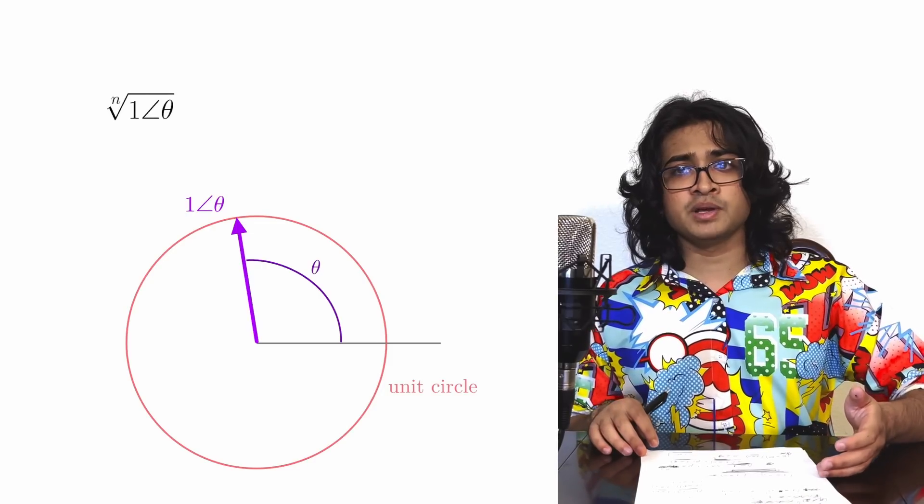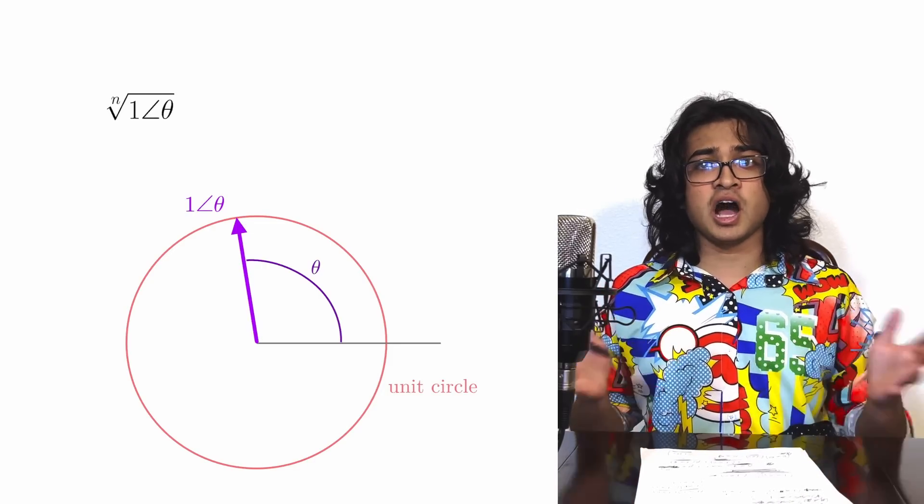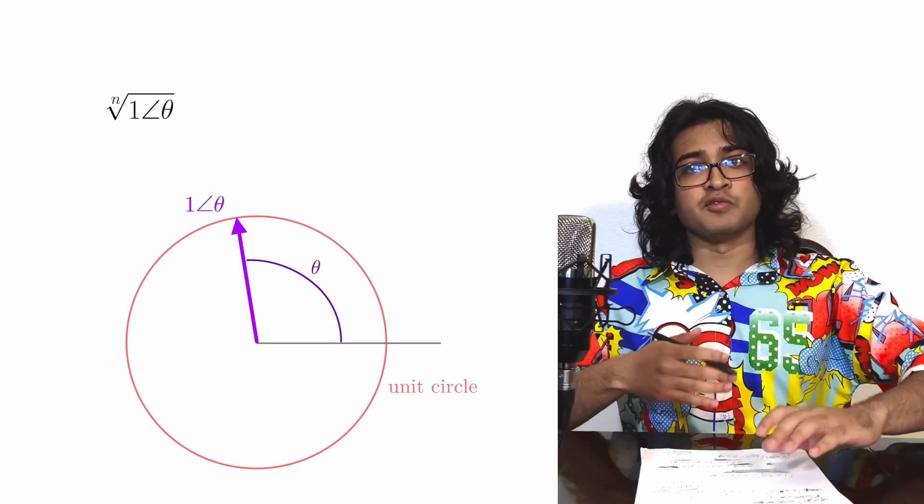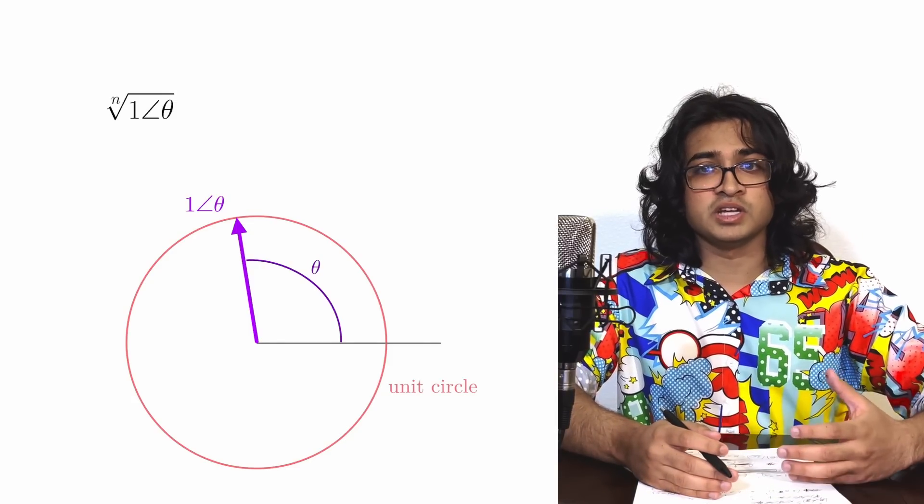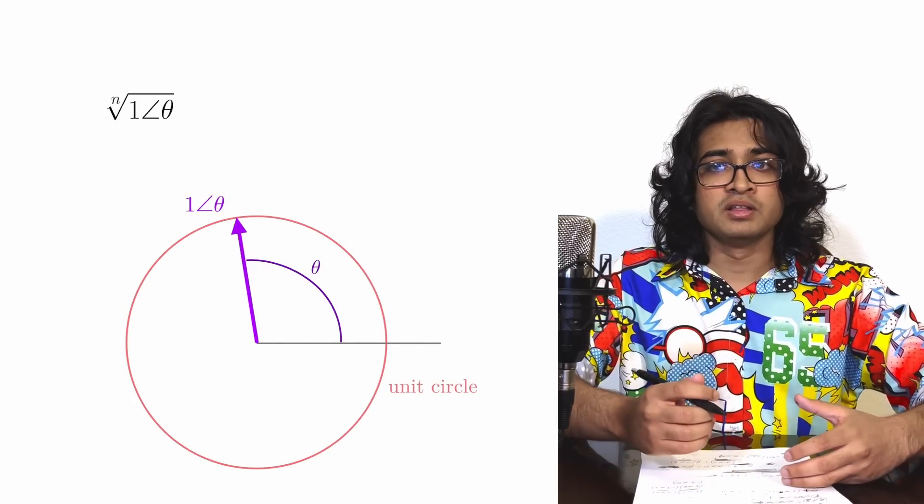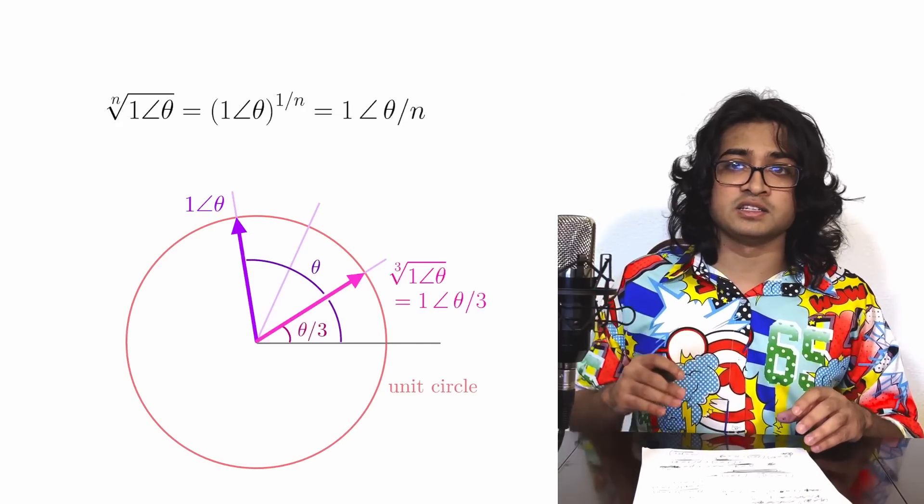The root operation then becomes easy to define because it's just the opposite of what our exponentiation does. If raising to the nth power multiplies the rotation angle by a factor of n, then taking the nth root should divide it by a factor of n.